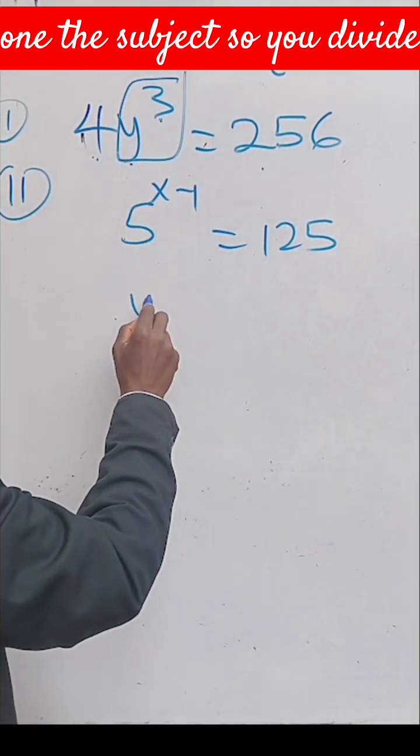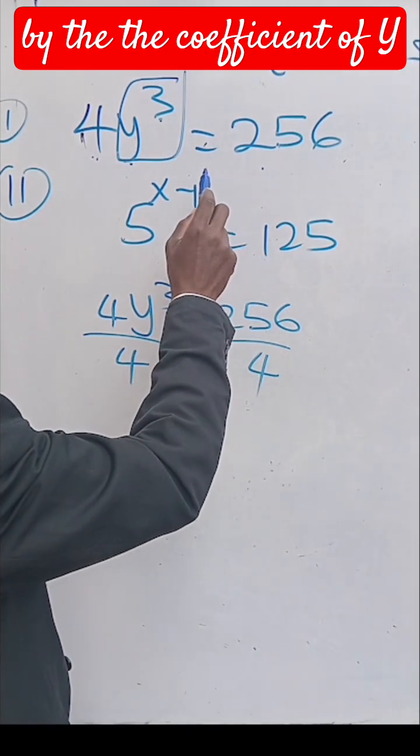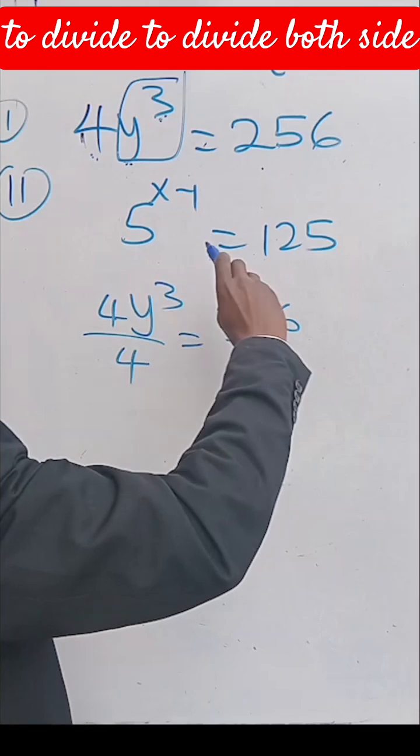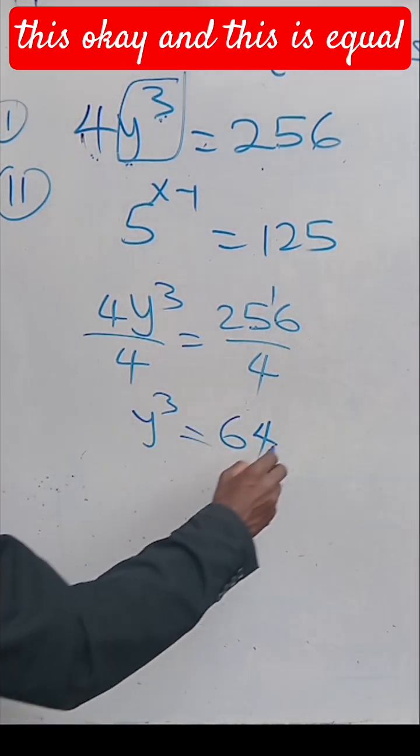So you divide by 4. The coefficient of y³ is 4, so use it to divide both sides of the equation.